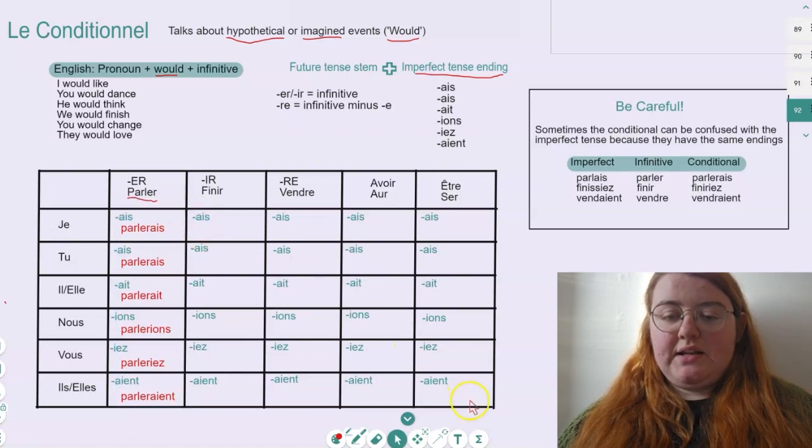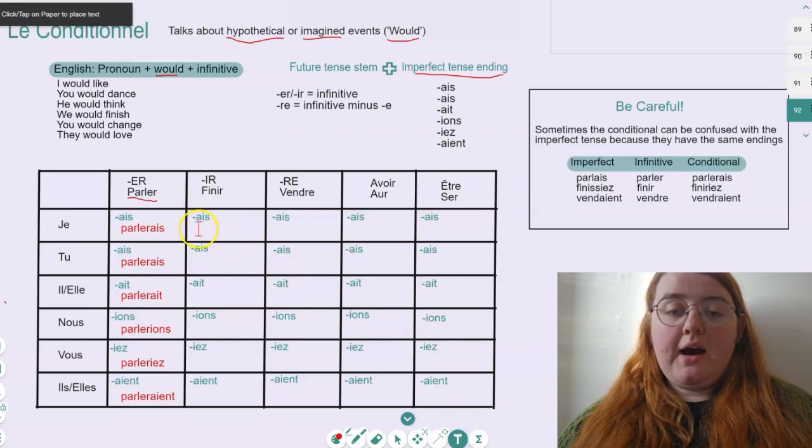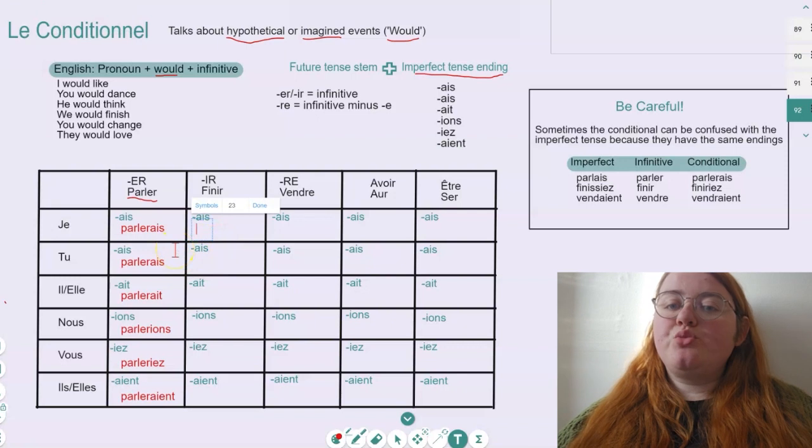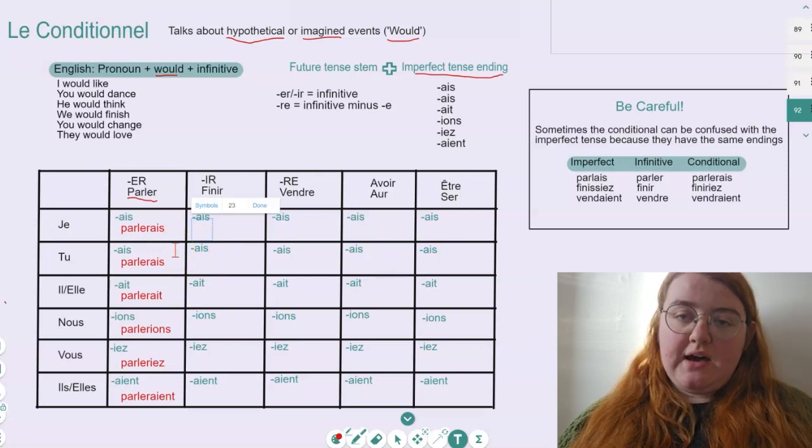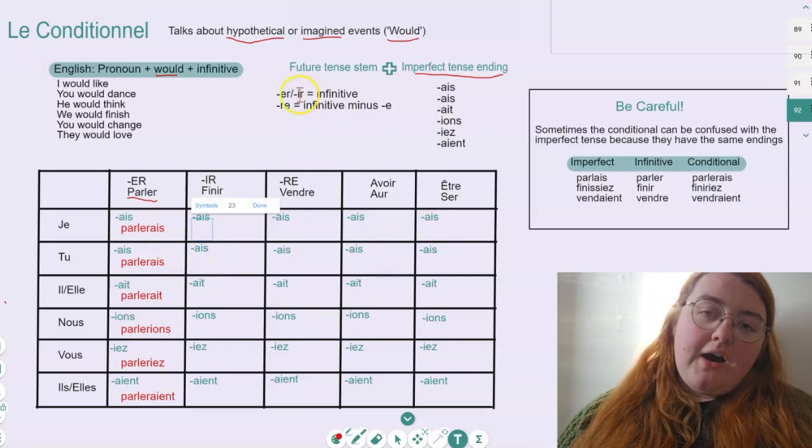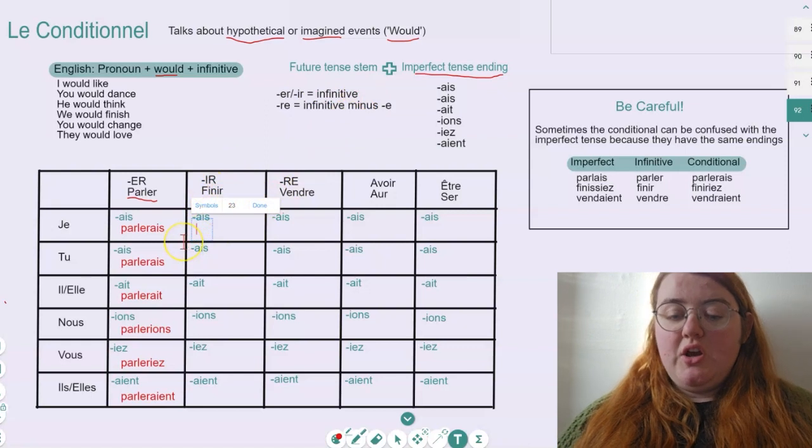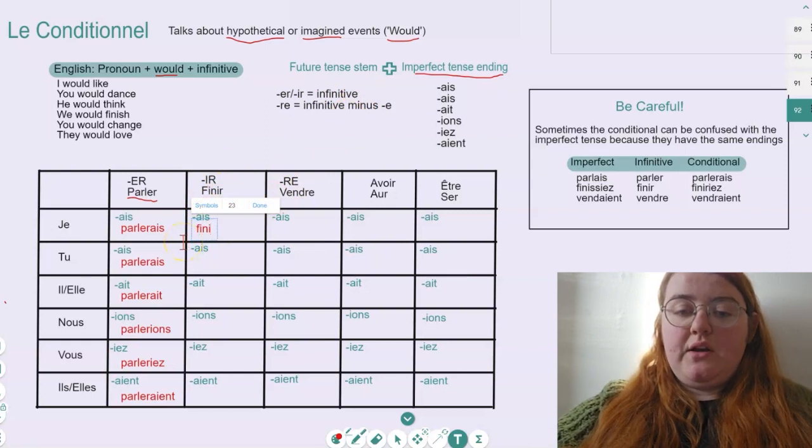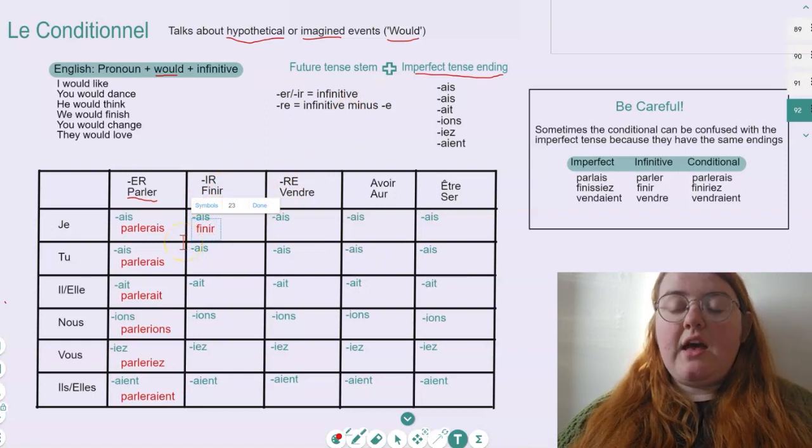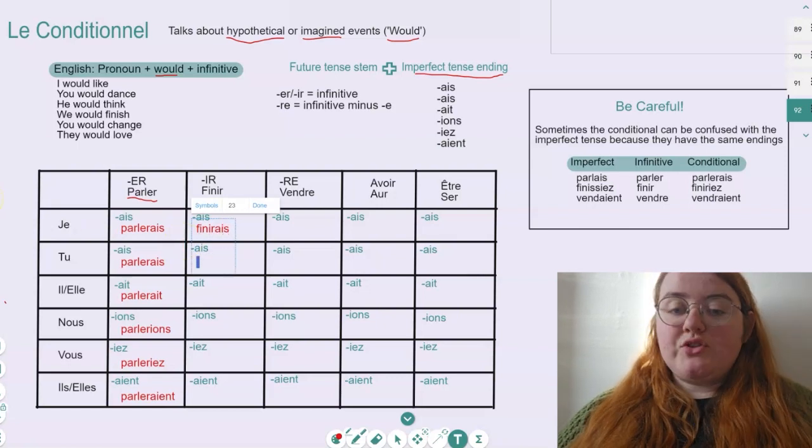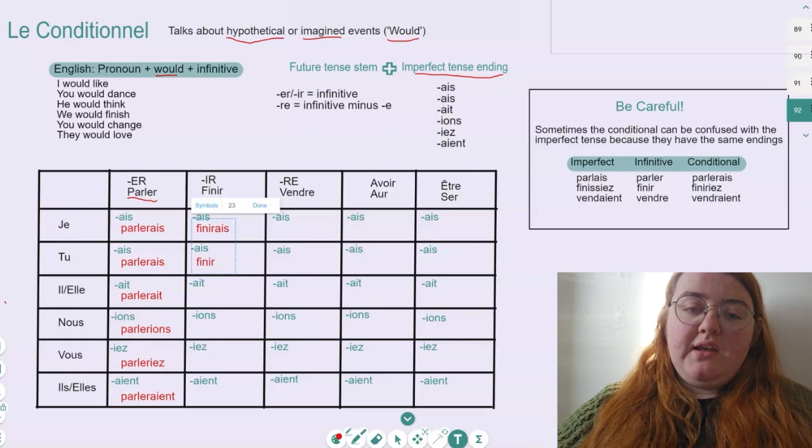Let's now move on to our IR verbs, which as you'll see very quickly, is pretty much the same as our ER verbs. We know that for our IR verbs, we want the infinitive as the stem. So here we have finir, 'to finish'. We want to start with je finir, and then we add our ending, finirais. With tu, we want our stem finir, add our ending, tu finirais.